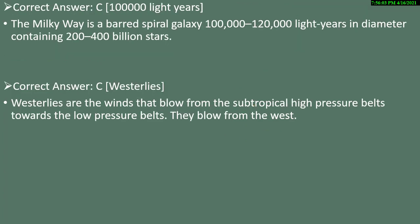The Milky Way is a bar spiral galaxy — if you see a photo, it looks like a spiral, like a jalebi. Its diameter is 1 lakh to 1 lakh 20 thousand light years, and it contains 200 to 400 billion stars. Westerlies are winds that blow from the subtropical high pressure belt towards the low pressure belt, called westerlies because they begin blowing from the west.